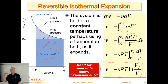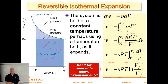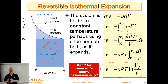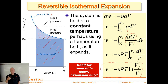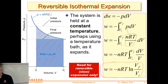When V_final is higher than V_initial, we have the natural log of a number greater than one — that's positive, so work is negative (system did work on surroundings). When V_final is smaller than V_initial, we have the natural log of something less than one — that's negative — and that sign cancels, giving a positive value for work. For compression, positive work means we did work on the system. So we have two equations: W = −P_ext ΔV for constant external pressure, and W = −nRT ln(V_f/V_i) for reversible isothermal expansion.